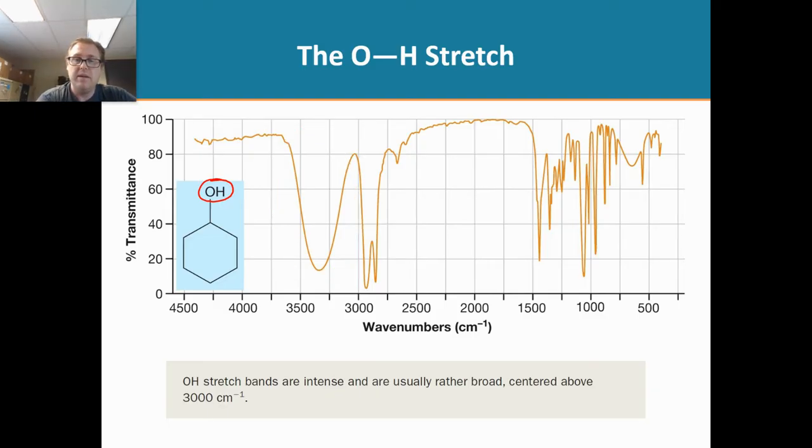Now the next thing I do is I look around 1700. I always do that when I see a spectrum. Why am I looking there? Because that is indicative of a carbonyl, and I don't have a carbonyl. So the carbonyl is another one that's really easy to spot.